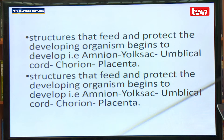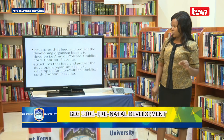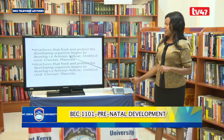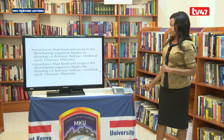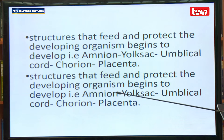Another key thing that happens in this stage of development is that structures which feed and protect the developing organism begin to develop — forming the foundation for the pregnancy to last 38 weeks. These structures include: amnion, yolk sac, umbilical cord, chorion, and placenta. These structures are important because they feed and protect the developing organism, and this begins to happen right from the first stage of prenatal development.